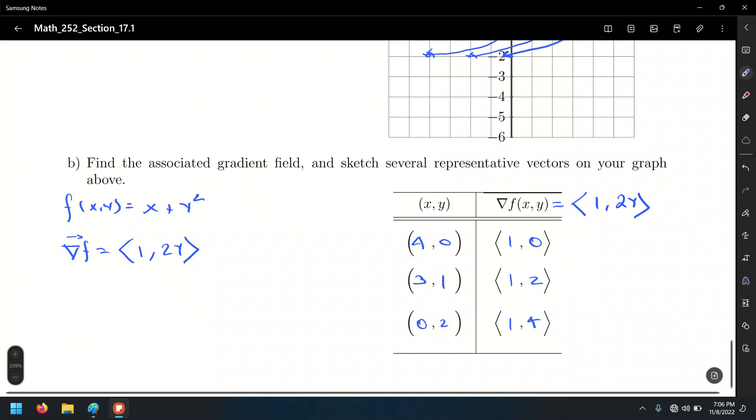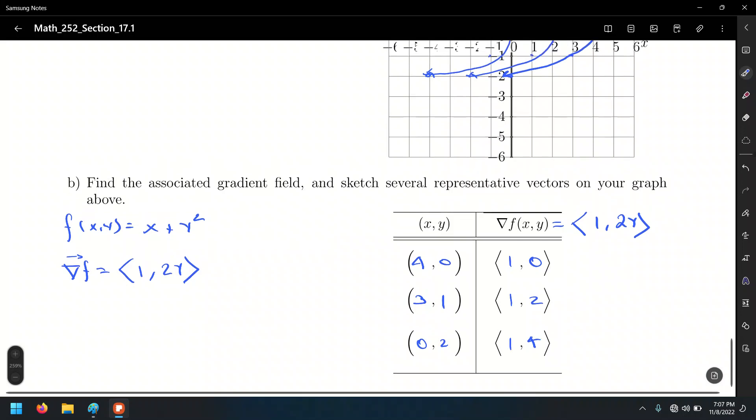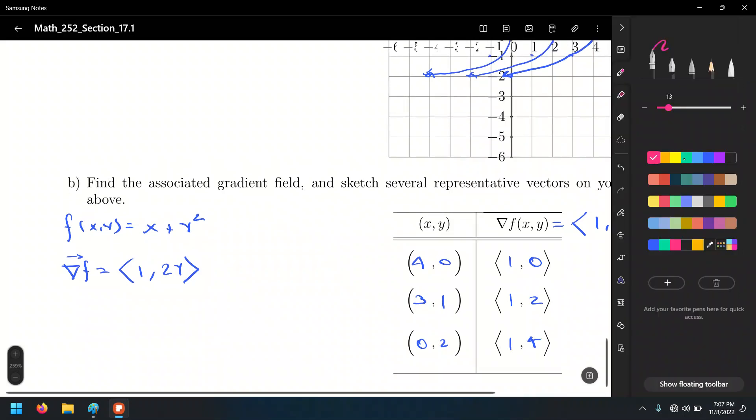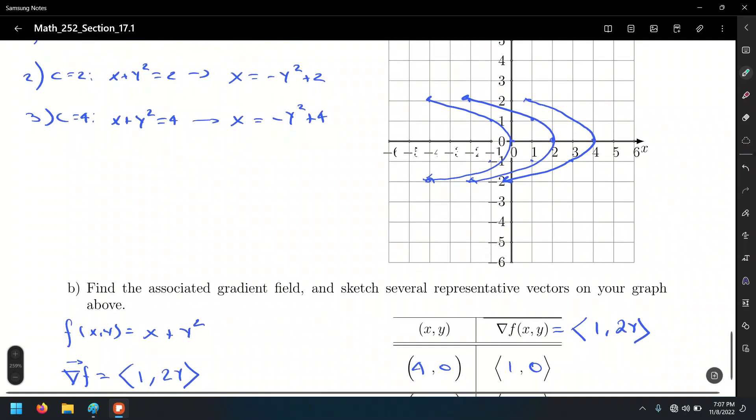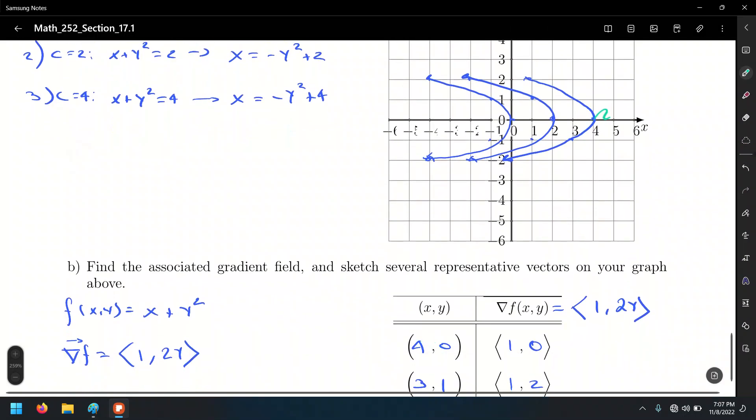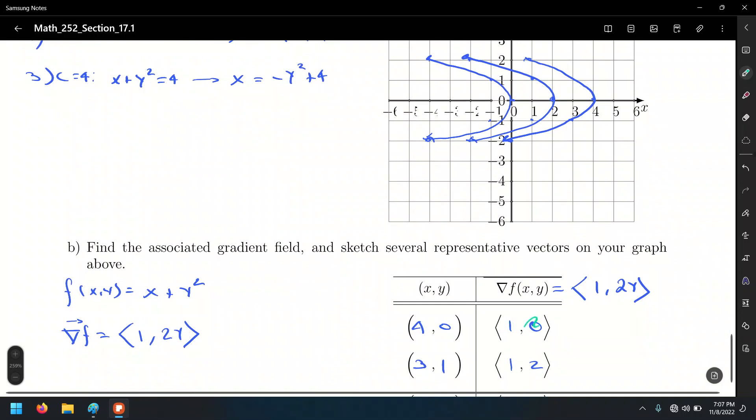So we're going to plot these vectors, these three vectors. Let me go back to the previous page, or rather to the previous picture. So at the point (4, 0), we're going to have the vector (1, 0). So go to the point (4, 0), and from there go 1 unit in the x direction and 0 units in the y direction. That's going to give us this vector.